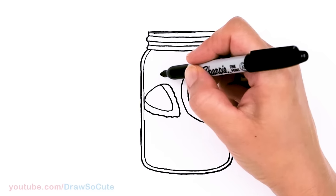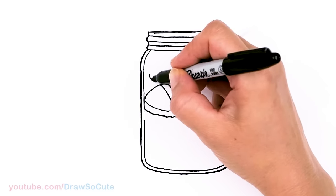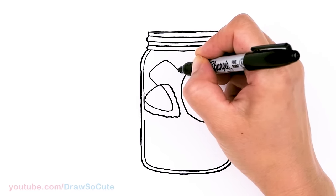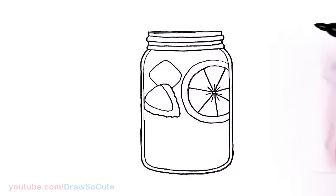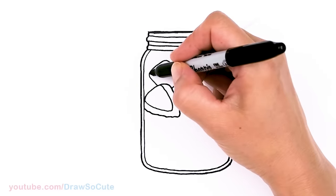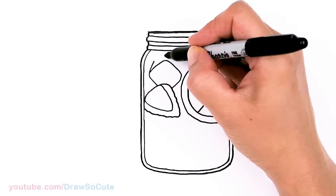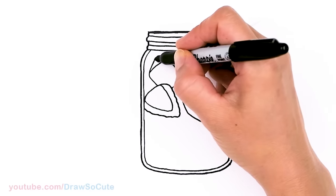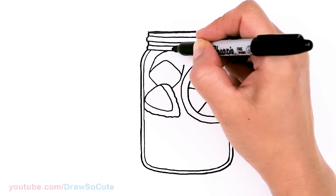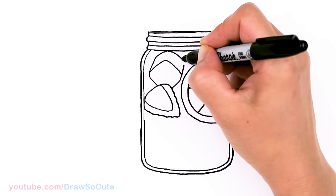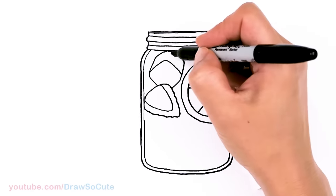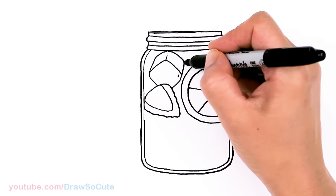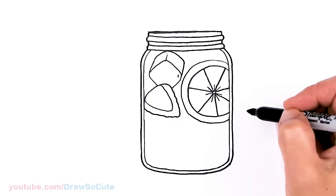So right here, let's add a cube of ice. So I'm just drawing this rounded off square. And let's give it some dimension. So I'm going to add some angles. Round off and connect. Then right here, you're going to add a little line to make it look like ice.